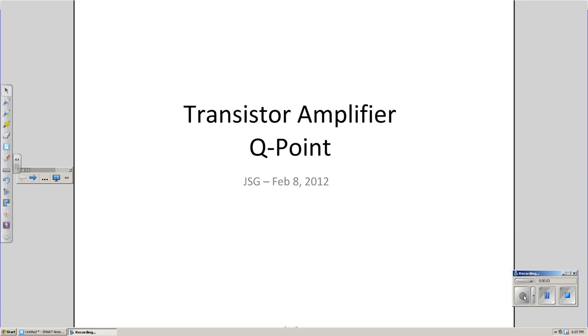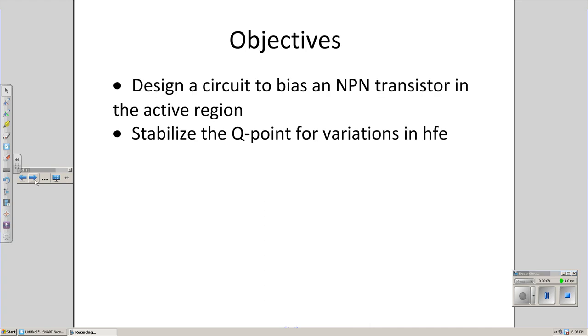Now let's look at how to design a transistor circuit to operate at a specific point on your load line. The objective here is design a circuit with an NPN transistor in it, bias it so it's in the middle of the active region. I'd also like to stabilize the Q point for variations in the gain, HFE or beta.